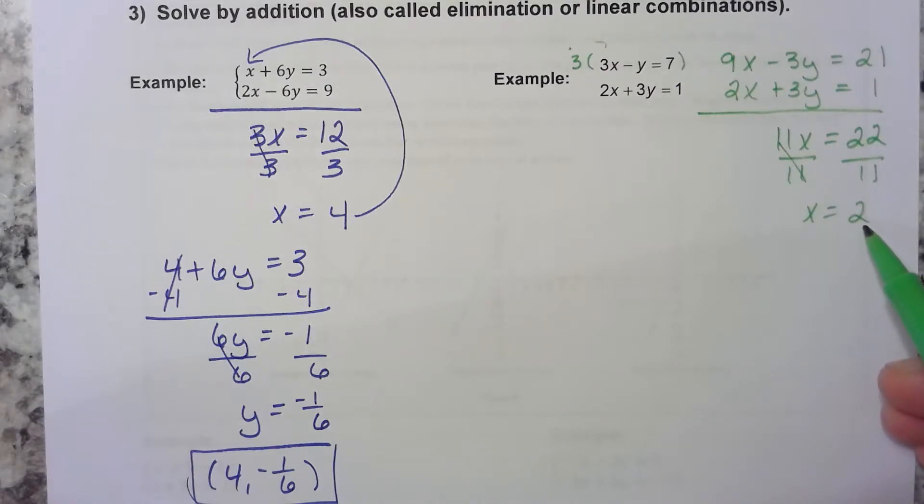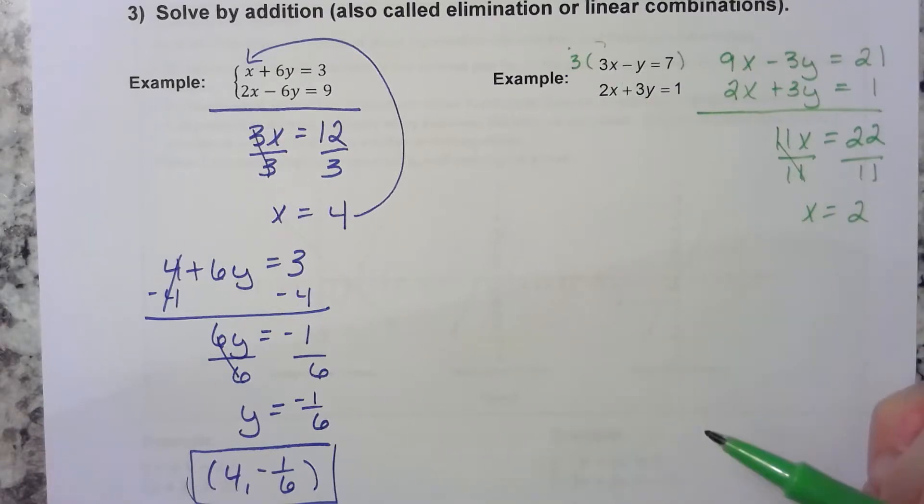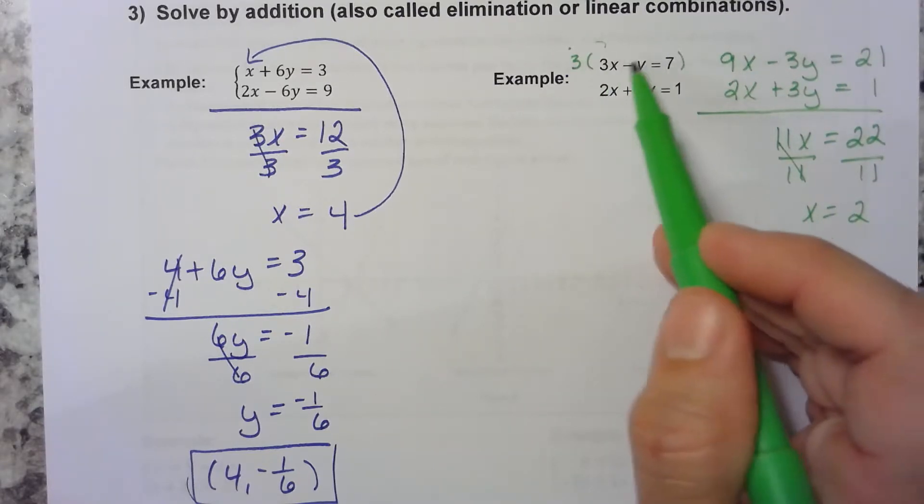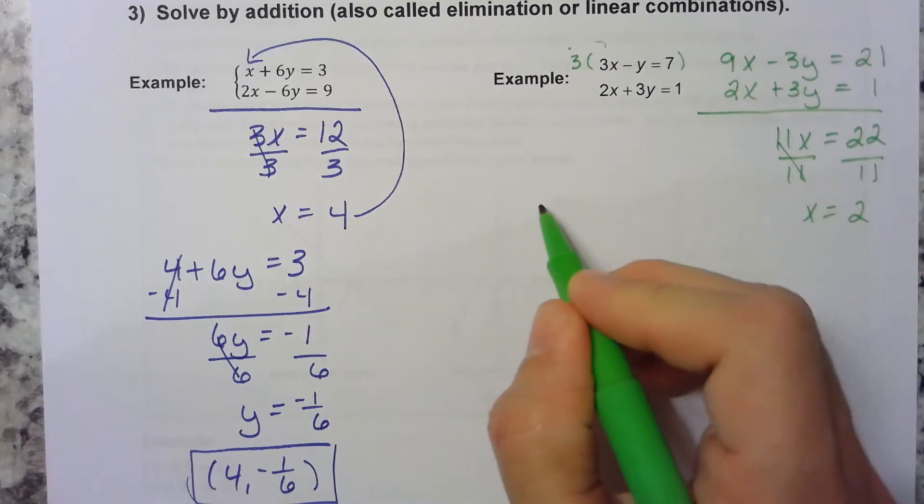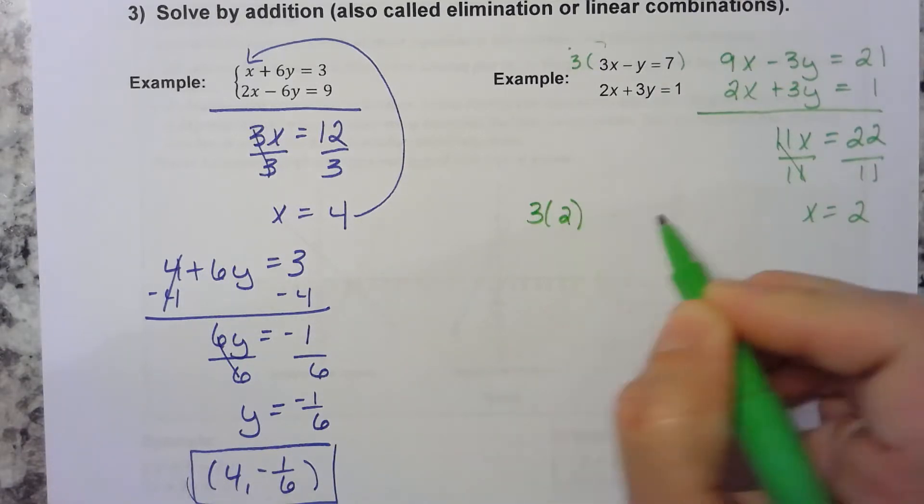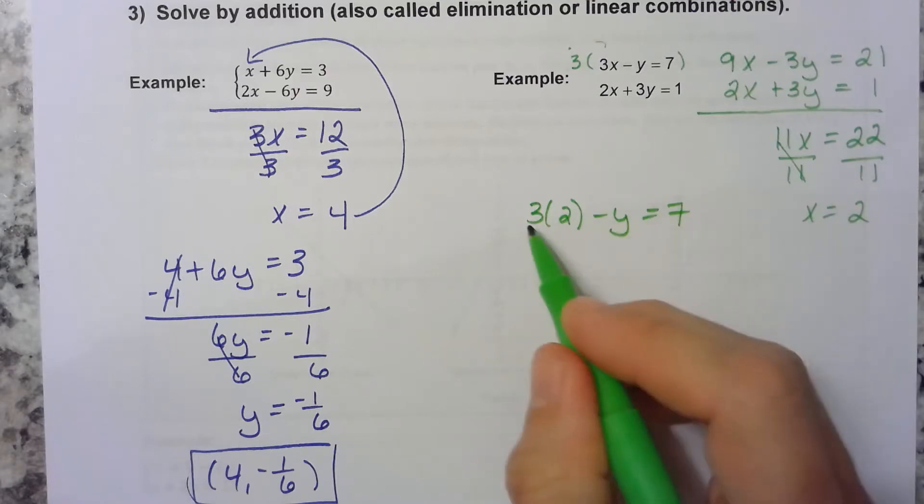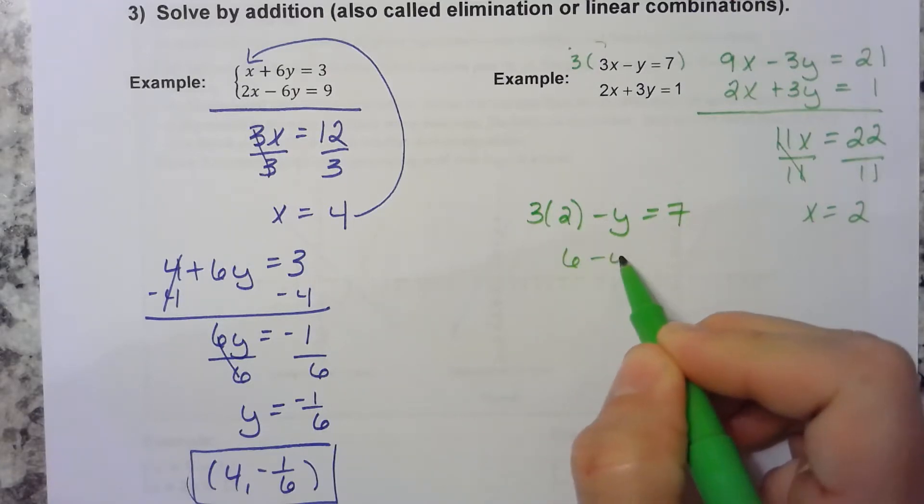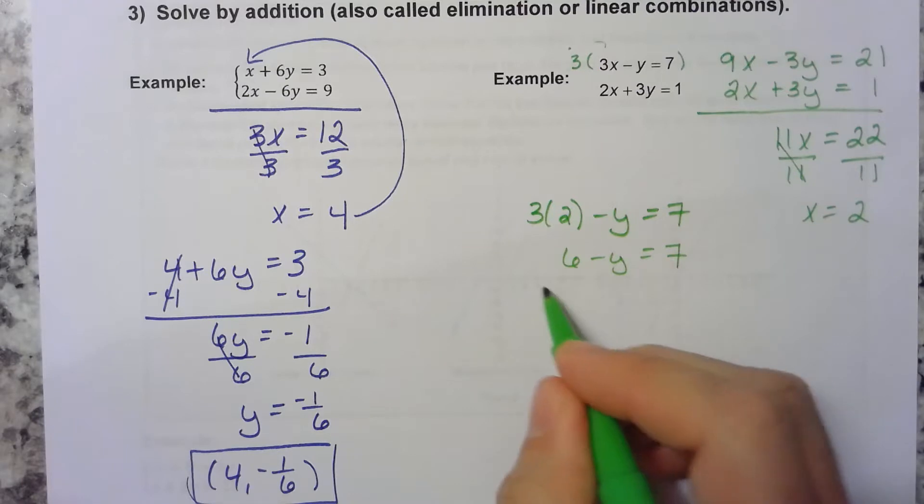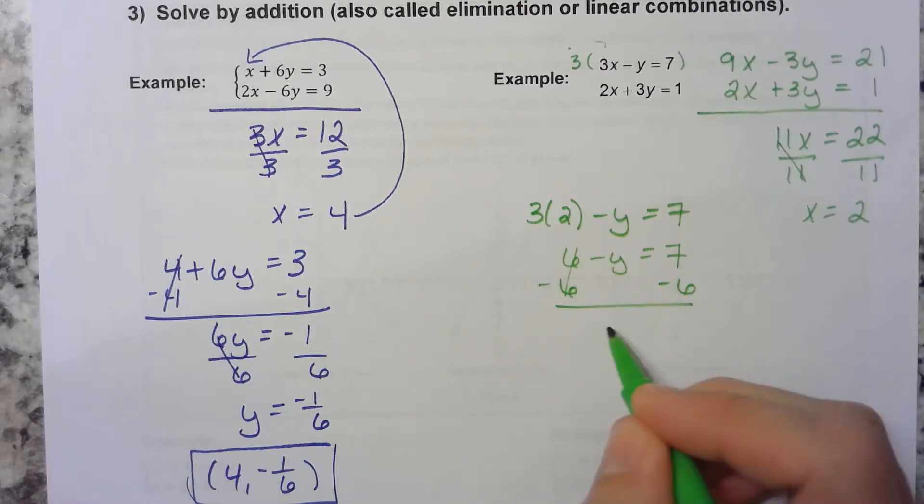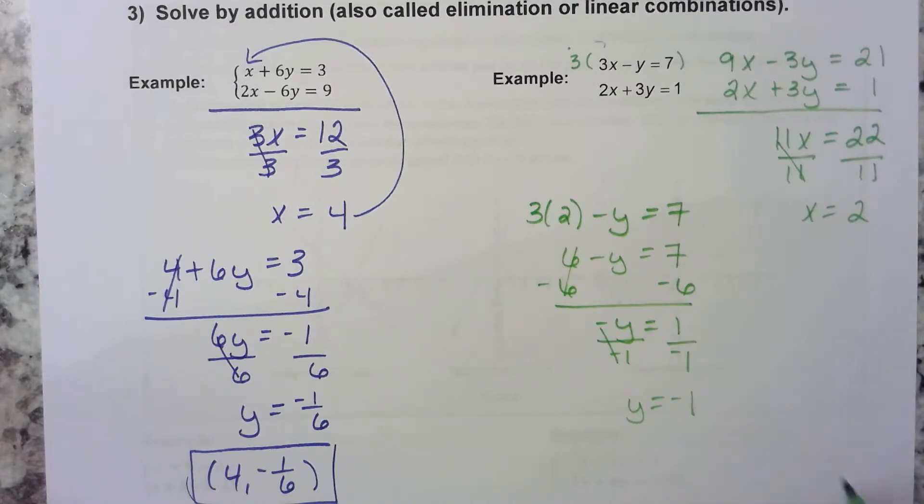Alright, so how do we solve for y now? We could take this 2 and substitute it back into either equation. Maybe we'll put it in the first one since y is almost by itself. So we have 3 times 2 minus y equals 7. 3 times 2 is 6. Subtract 6. Negative y is equal to 1. Divide by negative 1. So y is equal to negative 1. Our solution is the point 2, negative 1.